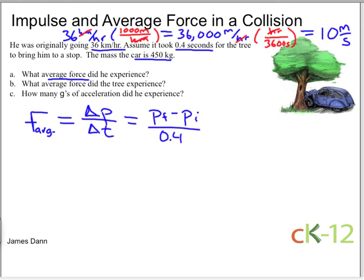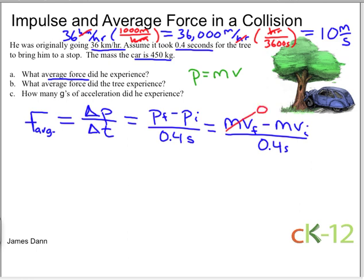We know that momentum is equal to mass times velocity, and therefore we have the mass times the final velocity minus the mass times the initial velocity divided by 0.4 seconds. The car came to a stop, so the final velocity is 0, and therefore 0 times m is 0, so this whole term is just 0.